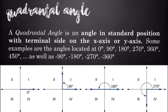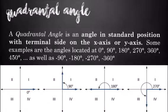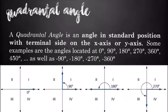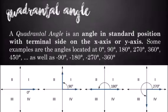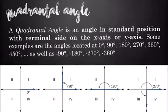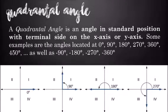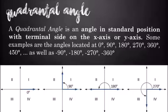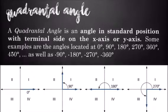A quadrantal angle is an angle in standard position with the terminal side on the x-axis or y-axis. Some examples are the angles located at 0 degrees, 90 degrees, 180 degrees, 270 degrees, 360 degrees, and 450 degrees.